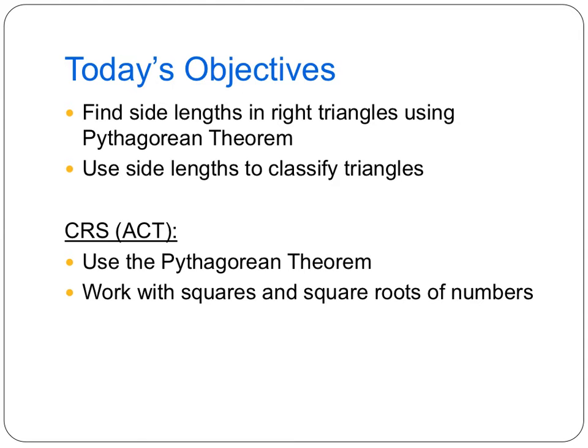First we'll look at what we're going to be doing. First we're going to find side lengths using the Pythagorean Theorem that we've already done before, so we're just going to do a quick review, and then we're also going to use side lengths to classify triangles. For the ACT you have to know the Pythagorean Theorem and you have to know how to work with squares and square roots of numbers which we will also review today.